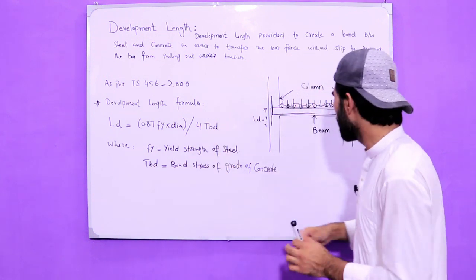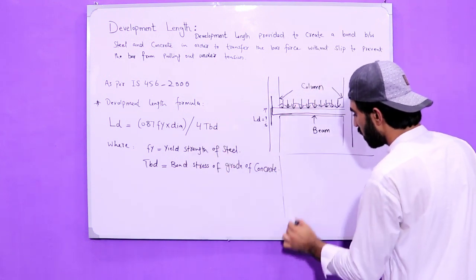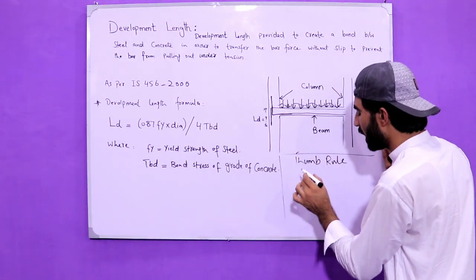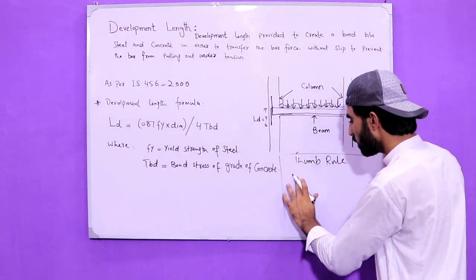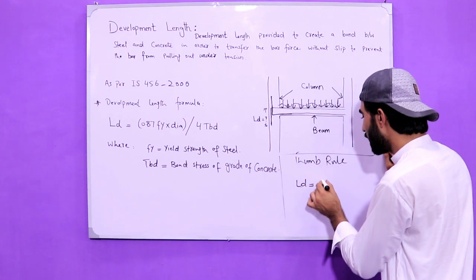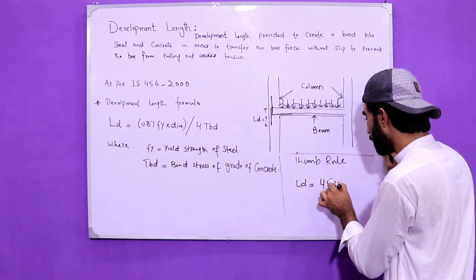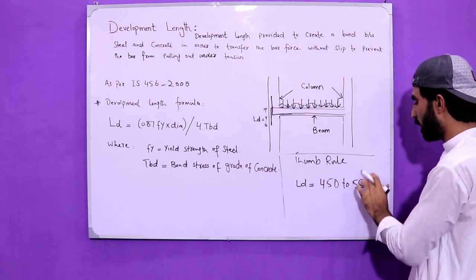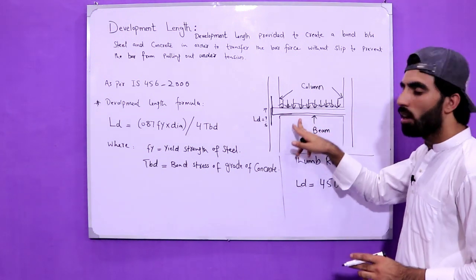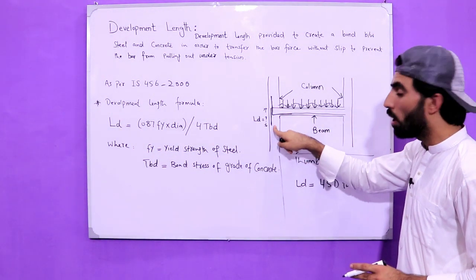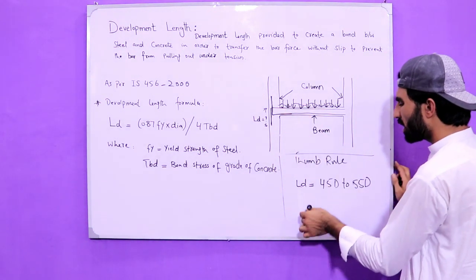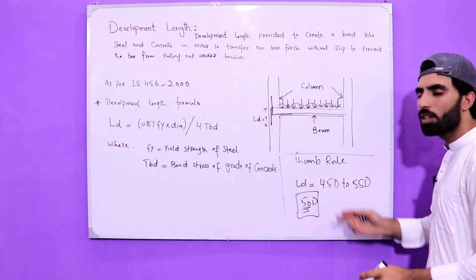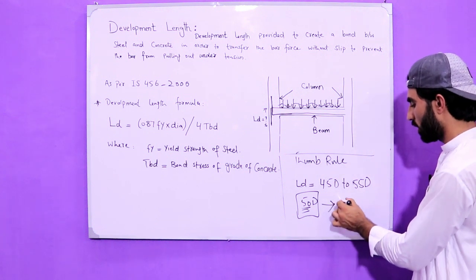Now, if you can't calculate using that formula, there is a thumb rule. By thumb rule, the development length Ld = 45d to 55d, where d is the diameter of the steel bar being used. Normally in projects we keep it 50d — it should not be less than 50d, though 45d can also be used.